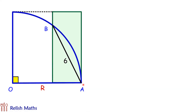Our first method is an unorthodox way of solving it. In this question, AB is the limiting factor to find the area of the rectangle. If we change the figure but still keep the length of AB the same as 6 cm, then the area of the rectangle should not change.